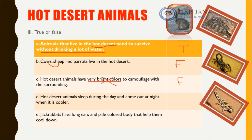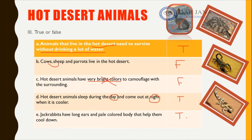'Hot desert animals sleep during the day and come out at night when it is cooler.' That is totally correct — during the day the weather is hot, and during the night it is cool, so they prefer to hunt at night. This is true. Jackrabbits have large ears and a pale-colored body that help them stay cool by giving off the heat from their body — this is also true.